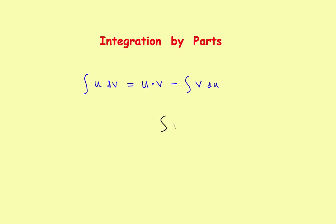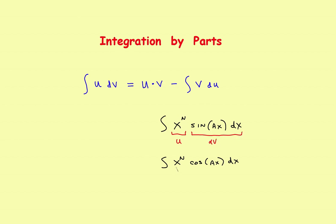It will be the integral of x to the n power times the sine of some constant times x dx. That's sine, but it could also be the cosine — so x to the n times the cosine of ax dx. If you have x raised to a certain power and then either the sine or the cosine, a good idea that will generally work is to let u be equal to the x term, and let the trig part be the dv.